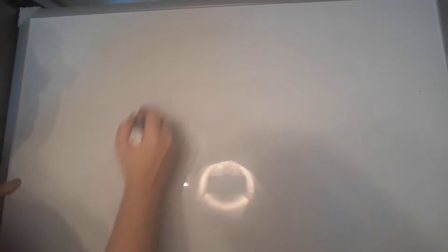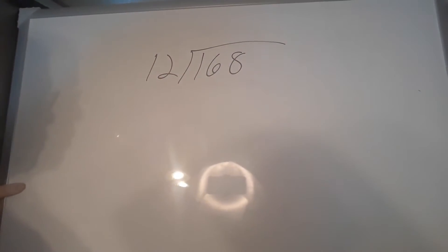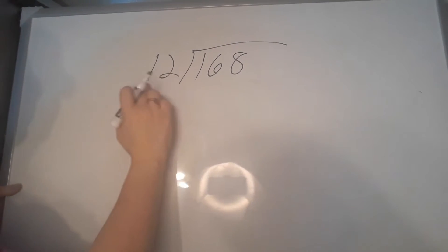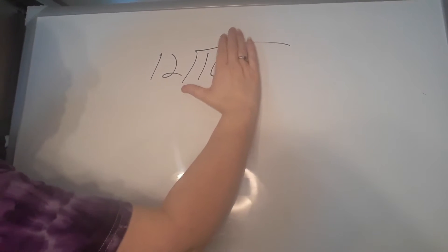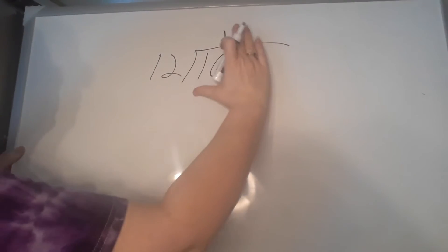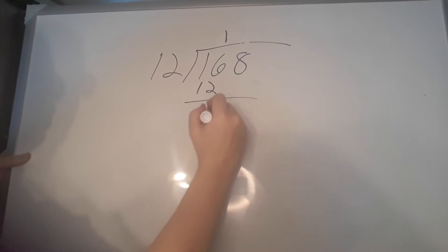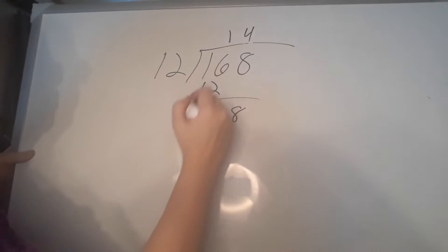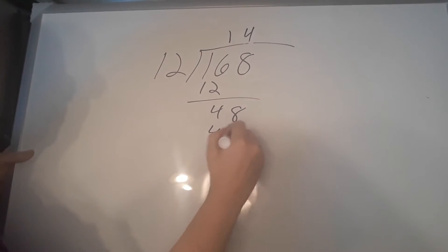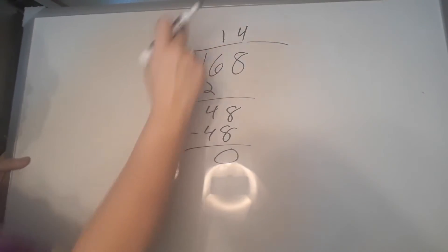Let's look at some long division. Let's divide 168 by 12. We write it this way. What we do is look at this number and see if it fits into each one of these. It doesn't fit into 1, but it does fit into 16 — it fits in once. So we put the 1 above the 6, because that's the last number we're dealing with there. We subtract off and we have 48. Now 12 goes into 48 four times, so we put it here. We multiply the 4 times the 12 and we subtract. So 168 divided by 12 is 14.